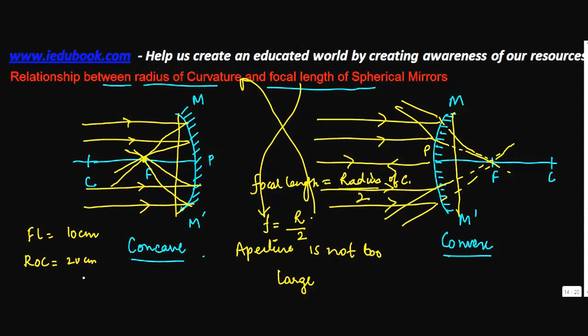Or let's say the radius of curvature is 40 cm, then the focal length is equal to 40 upon 2 or 20 cm. So the distance of the focus from the pole is half that of the radius of curvature. This is r, this is f, the focal length.